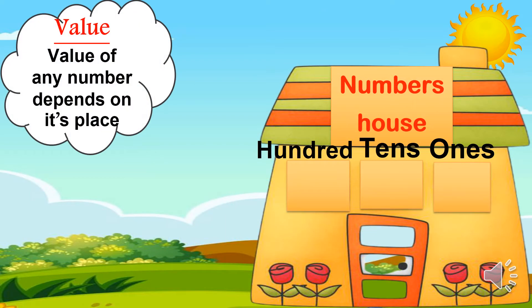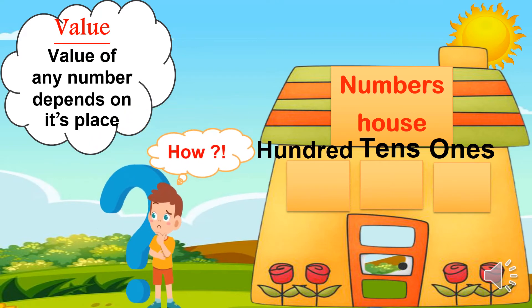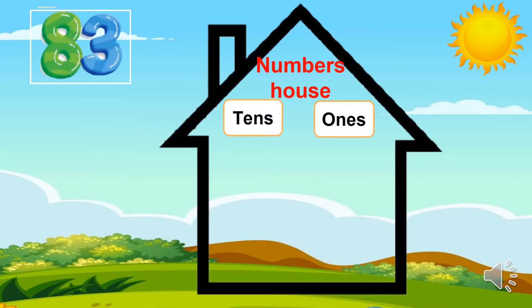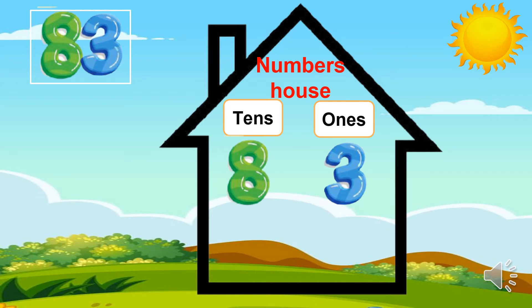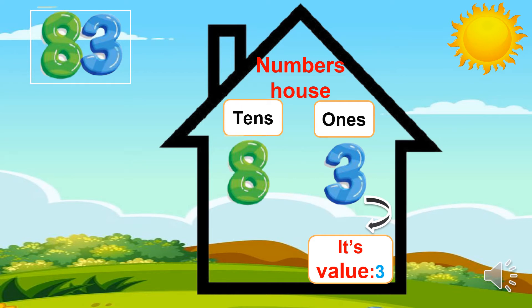Let's move to the value. What's meant by value? The value of any number depends on its place. We have the number eighty-three. First I get the places: ones and tens. Three is in the ones place and eight is in the tens place. Now, three in ones place — its value equals three. Eight in tens place: remember, one in tens equals ten, two in tens equals twenty, three in tens equals thirty. So eight in tens equals eighty — its value is eighty.